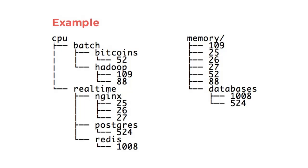You can observe that every process present in the CPU cgroup hierarchy is also present in the memory cgroup hierarchy. This means that for a process, CPU time allocation is controlled by the CPU cgroup, and memory allocation is controlled by the memory cgroup.